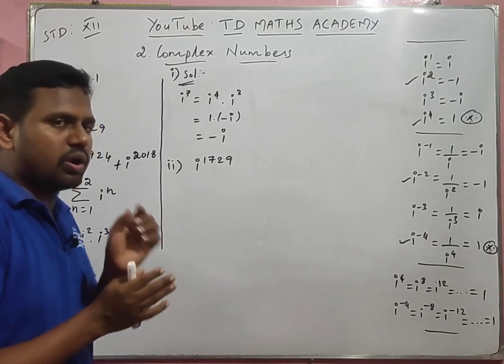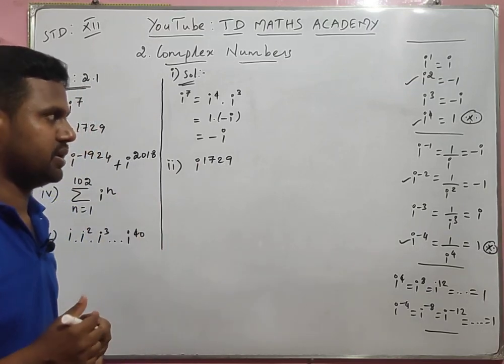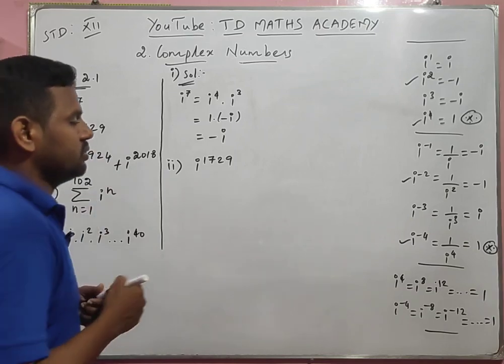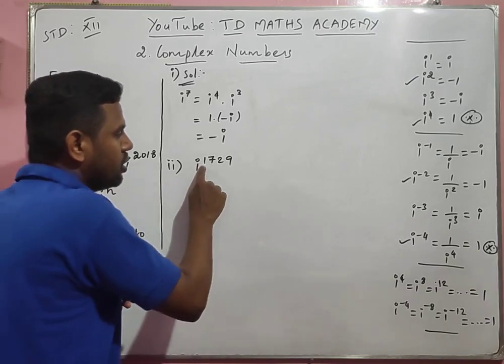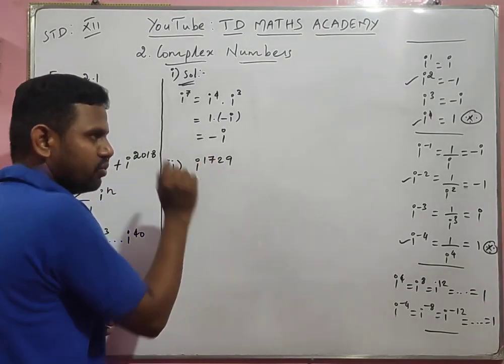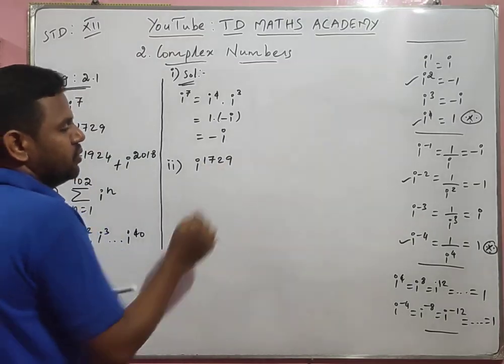We have one divisibility property: if a number is divisible by 4, or a multiple of 4, we can use this. You check whether the last two digits of the number form a multiple of 4.